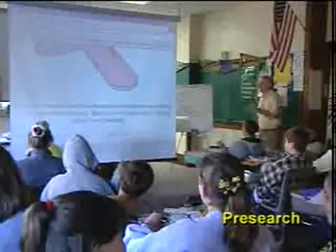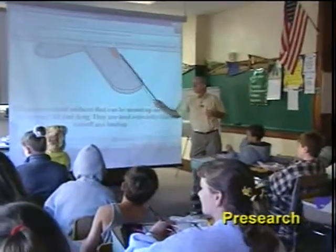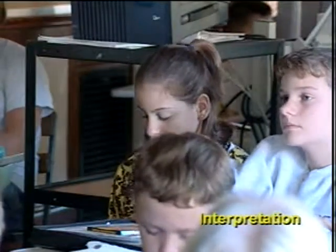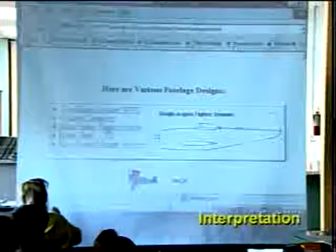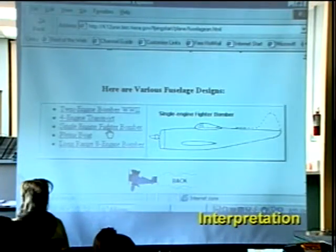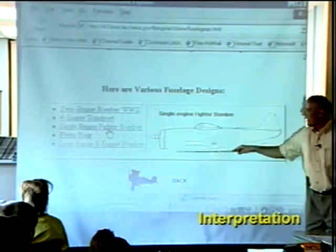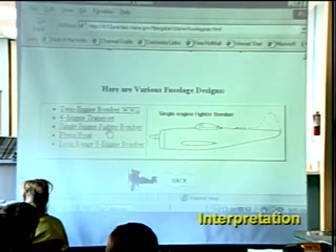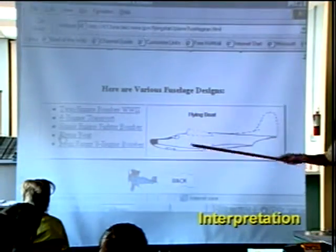So what is this going to do for our airplane? The students enter the interpretation stage of information processing as they view different airplanes. They compare and contrast different fuselage sizes and analyze various airplane designs. Through this activity, the students infer the function of different fuselage shapes.